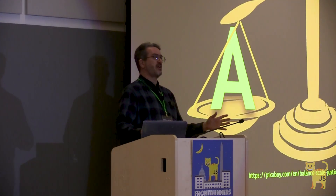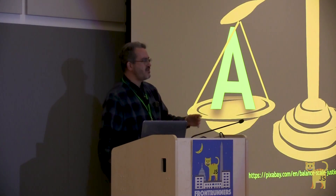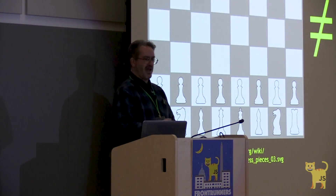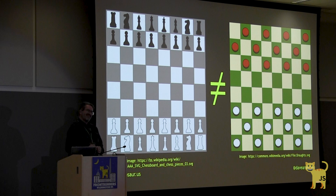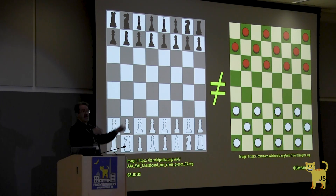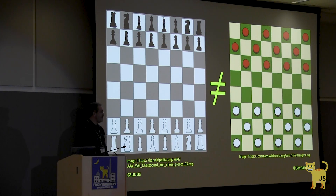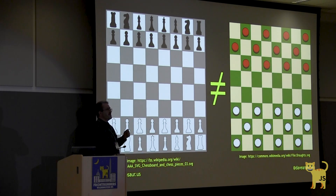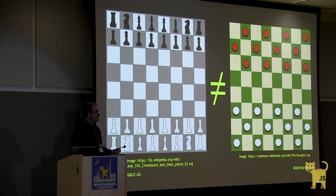Suppose you want a program to play checkers, and I write for you the world's greatest chess-playing program. It's as correct, robust, usable, maintainable, and efficient as anyone could ever possibly want. But are you going to be happy with it? Probably not. But why not if it's so great? Because it's not checkers. It's not what you asked for, it's not what you need. In ACRUMEN terms, it's not appropriate.